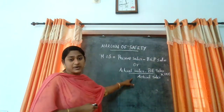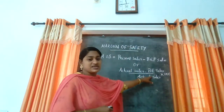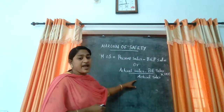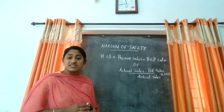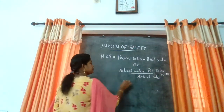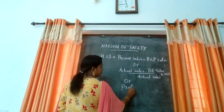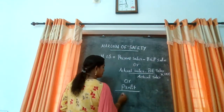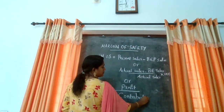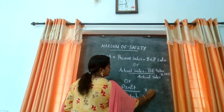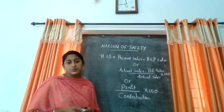Margin of safety can also be calculated in percentages: actual sales minus break-even sales, divided by actual sales, into 100. The other formula for calculating margin of safety is profit divided by contribution into 100.